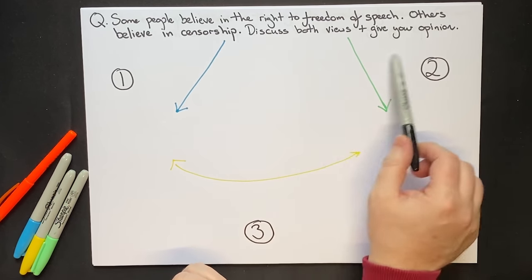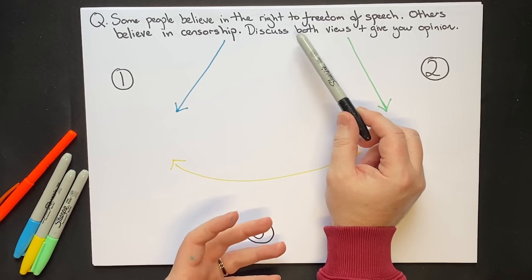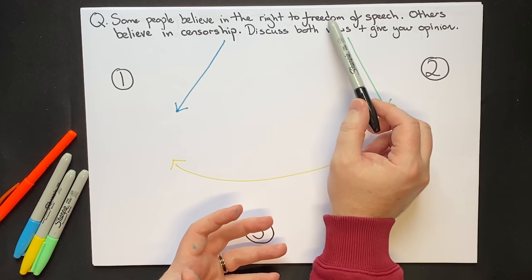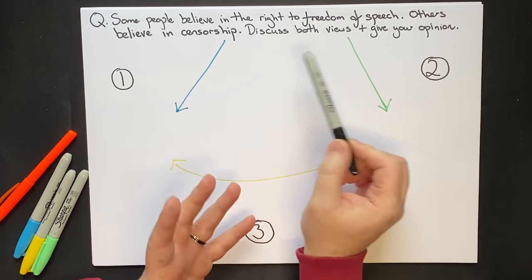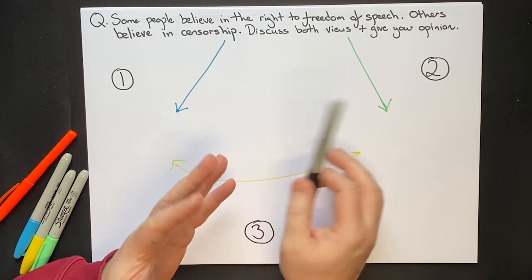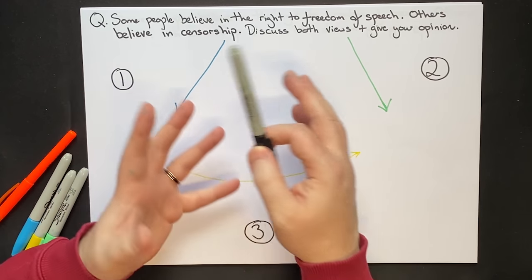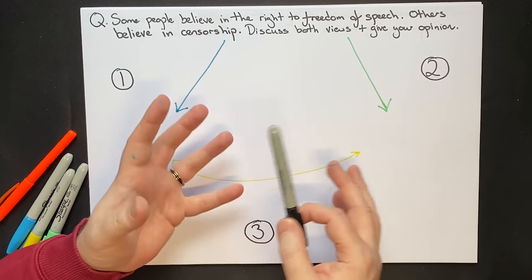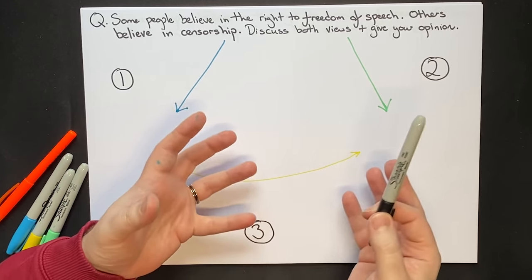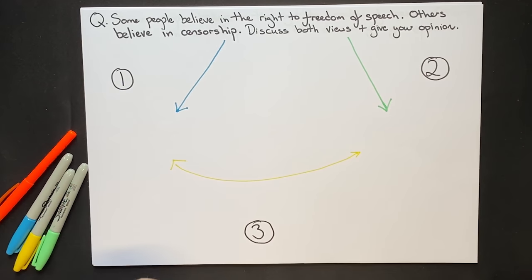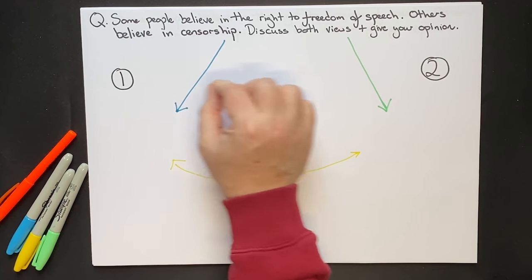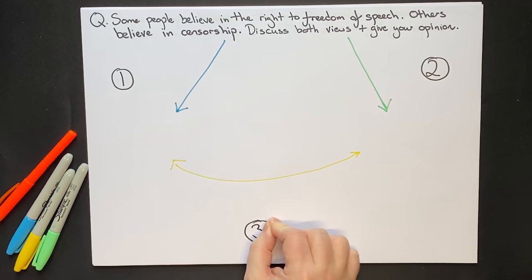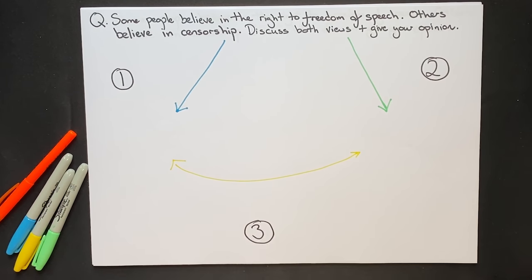When students see a question like this, they think: 'Well, I believe in freedom of speech, but I also think that some things should be censored,' and their thinking becomes very muddled and confused. How we solve that for our students is we get them to do three things, because these are the three things that the examiners are looking for.